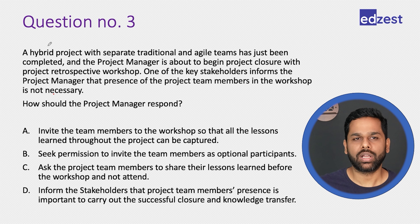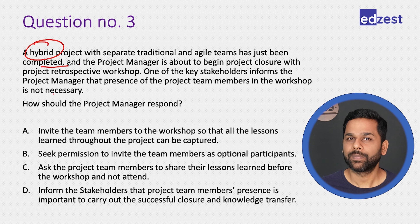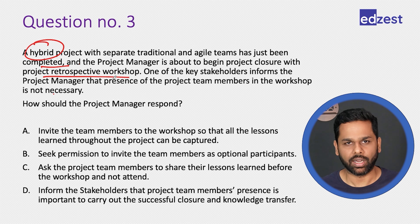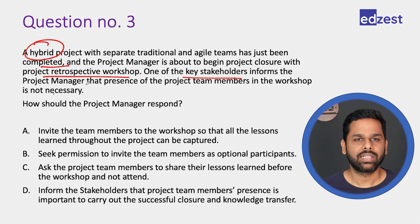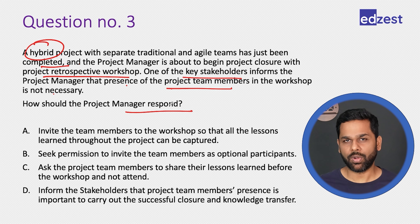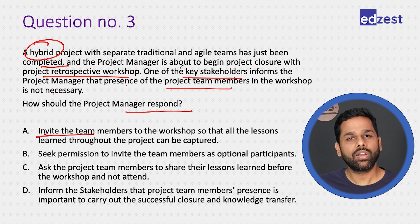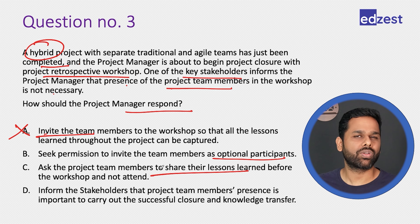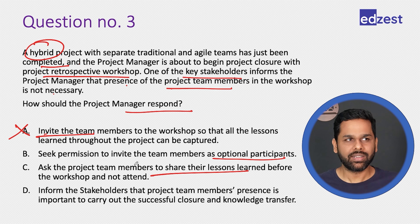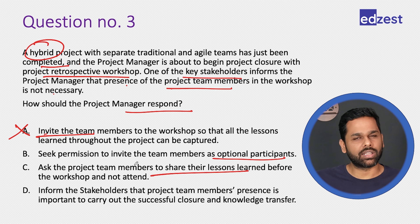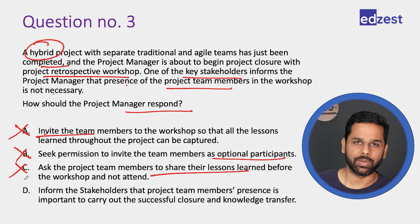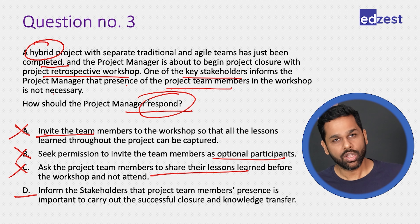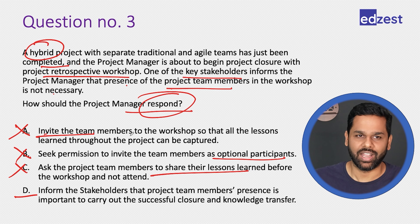Summary of this question: the question talked about a hybrid project at the closure stage with a retrospective workshop planned. A key stakeholder said team members are not required. We cannot directly invite them while ignoring somebody's information or suggestion. We also should not find a workaround. Project retrospective is important — team members should attend to share their points, learn from others, and grow together. D is better because we respond in a way that ensures the project is successfully closed.